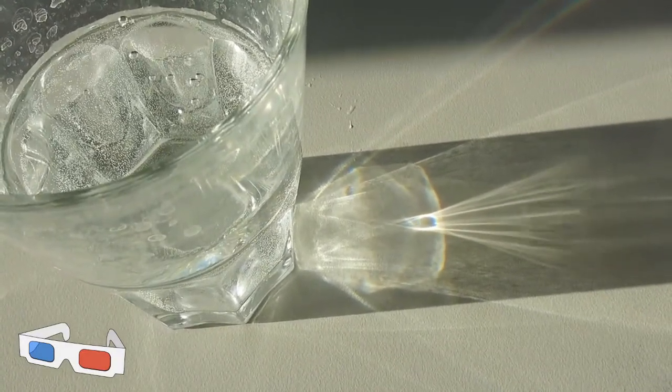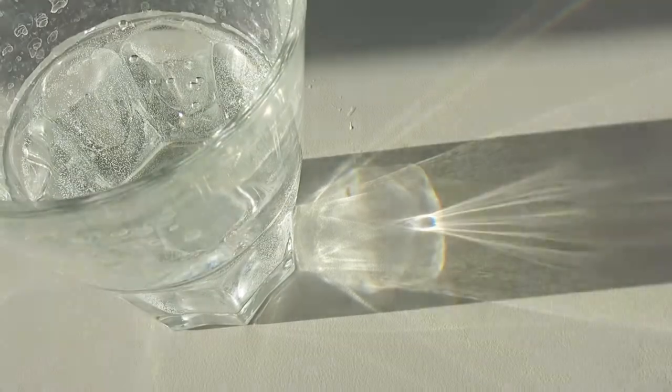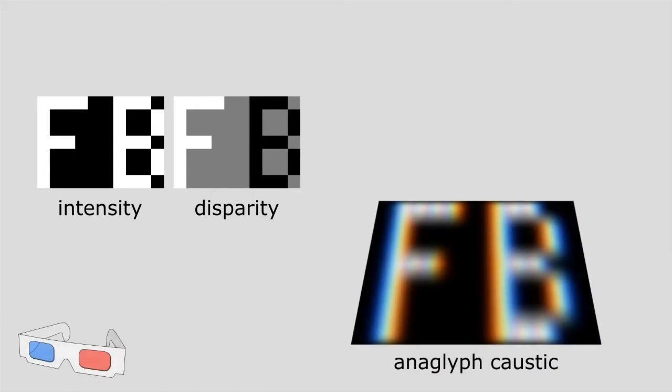In our work, we model this effect to produce anaglyph caustics. Given an input intensity and disparity image, this stereoscopic caustic is produced by a lens.